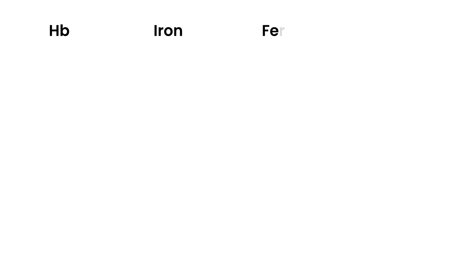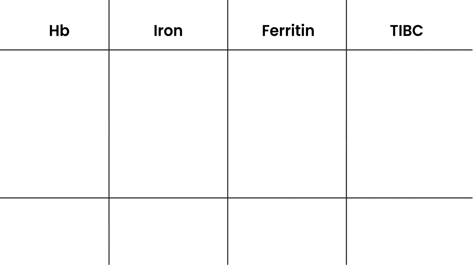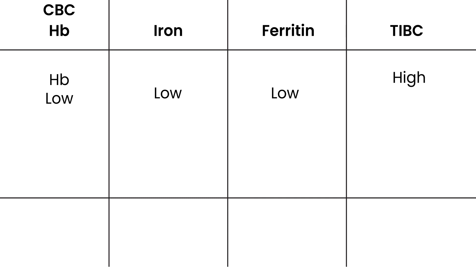For diagnosis, you order a CBC and check hemoglobin, iron, ferritin, and TIBC. The hemoglobin will be low — that's essentially the definition of anemia. The serum iron will be low, and since ferritin is where iron is stored, ferritin will also be low. TIBC, however, will be high.